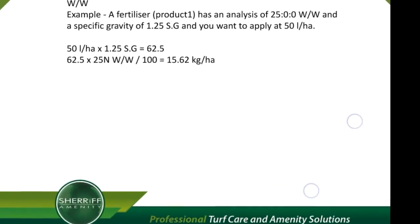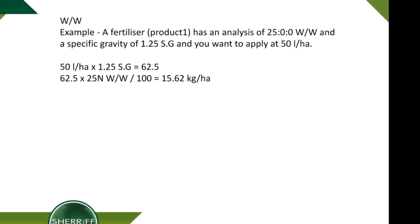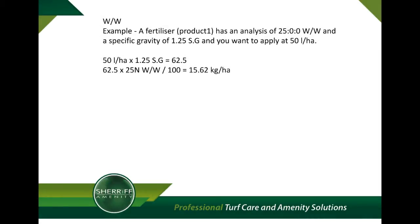Let us start with a weight by weight liquid fertilizer product and then compare this to a weight by volume product so you can see the differences more clearly. Fertilizer product one has an analysis of 25-0-0 NPK weight by weight and a specific gravity of 1.25, and you want to apply at 50 liters per hectare. 50 liters per hectare times 1.25 specific gravity equals 62.5. Then 62.5 times 25 (nitrogen weight by weight) divided by 100 equals 15.62 kilograms per hectare of nitrogen.